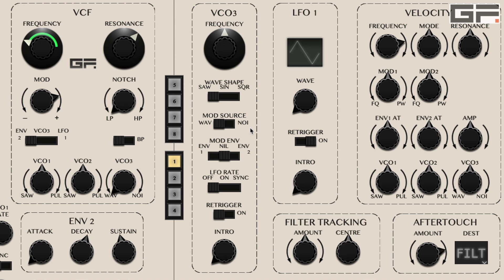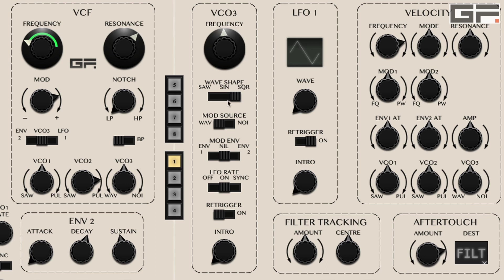The mod source switch determines whether the sine, saw, or square waveforms are used as a modulation source, or noise — specifically pink noise. The mod envelope switch enables modulation via envelope 1, envelope 2, or nothing if desired. LFO rate determines whether VCO3 is used as an audio rate oscillator or a low frequency oscillator. When used as an LFO, the frequency and wave shape are selected via the frequency knob and wave shape switch. There is also a re-trigger option and an intro or ramp-in mode, as per LFO1.